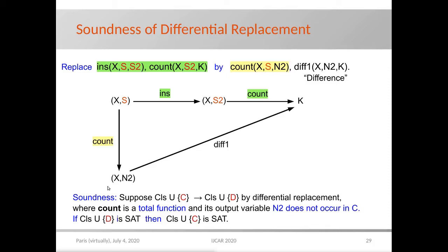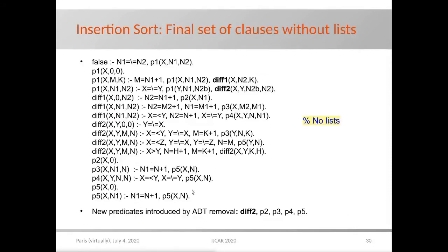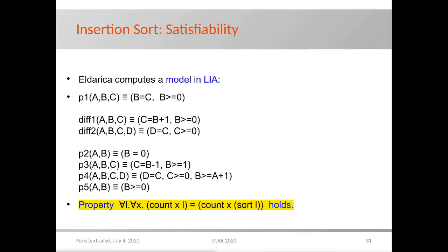By continuing the ADT removal transformation, we finally get a set of clauses on linear integer arithmetic. The transformation algorithm introduces another difference predicate Diff2, and also additional predicates from P2 to P5. This final set of clauses is satisfiable, and indeed Eldarica is able to compute a model. Thus, by the soundness of the transformation, the property we wanted to prove indeed holds.